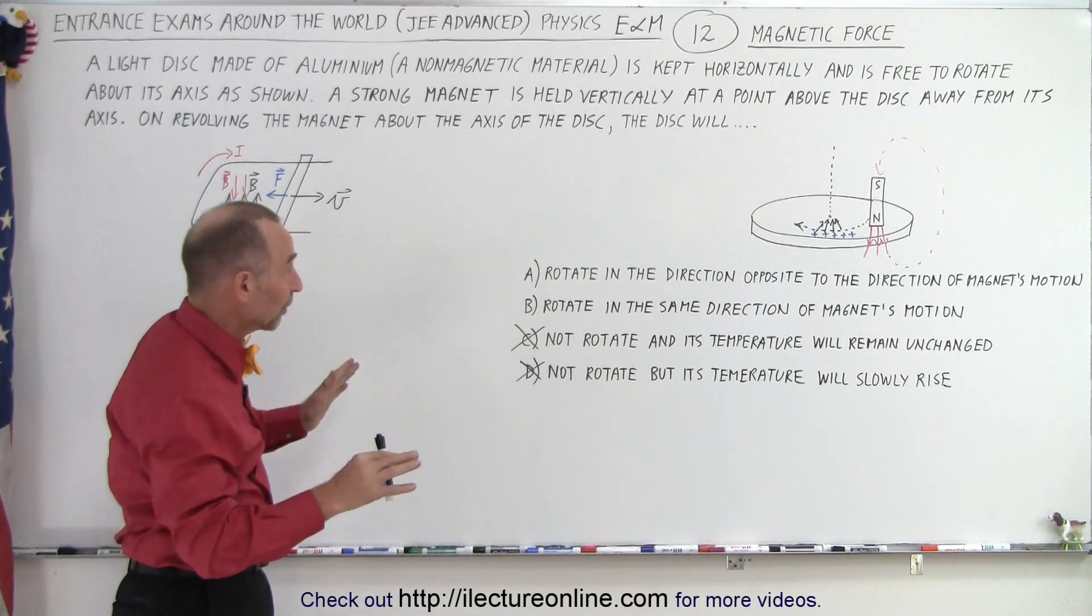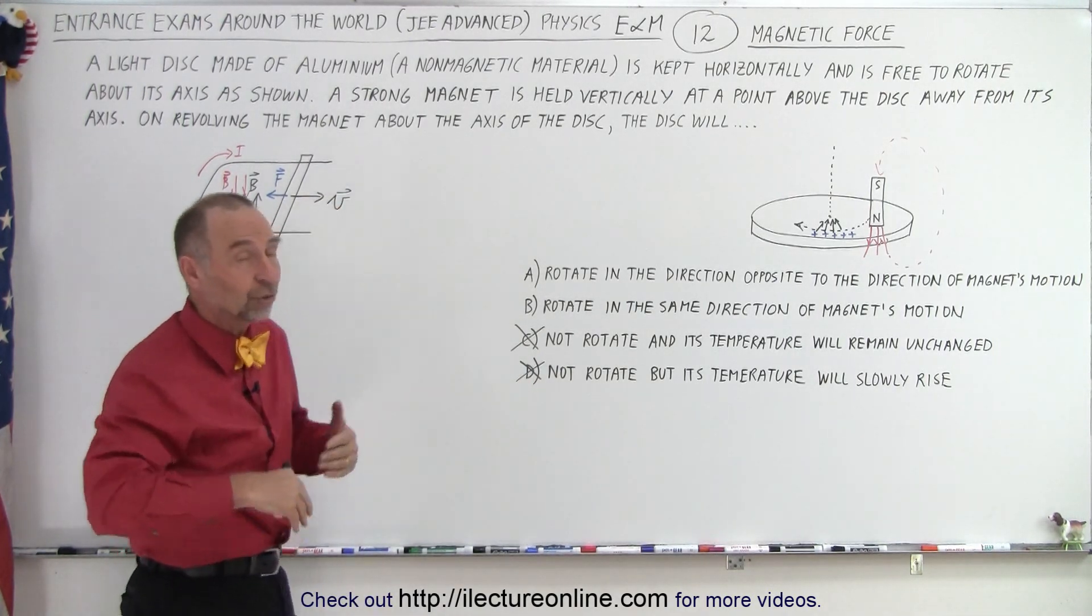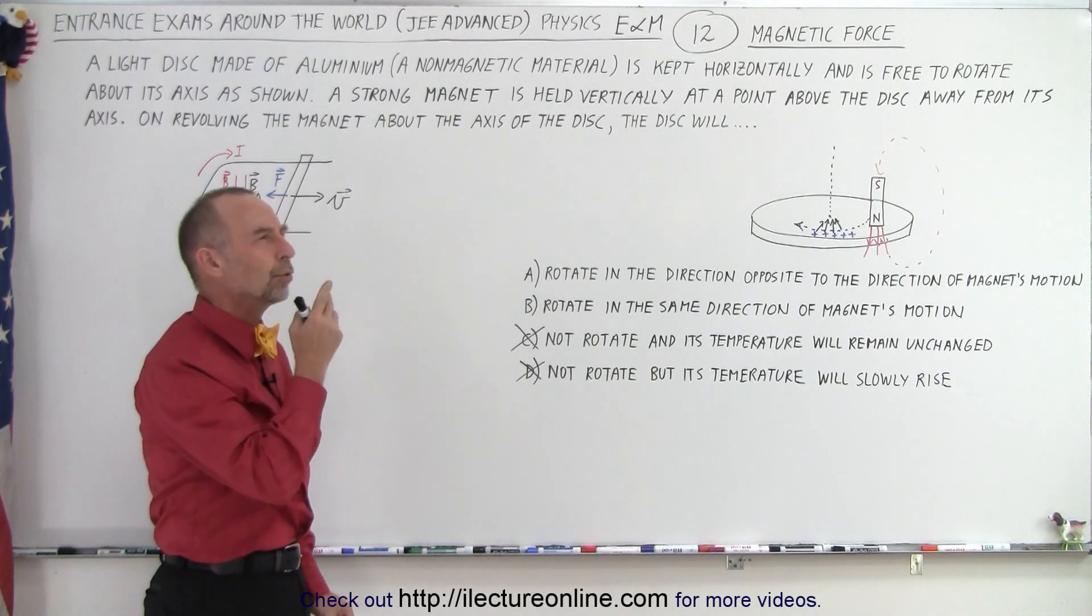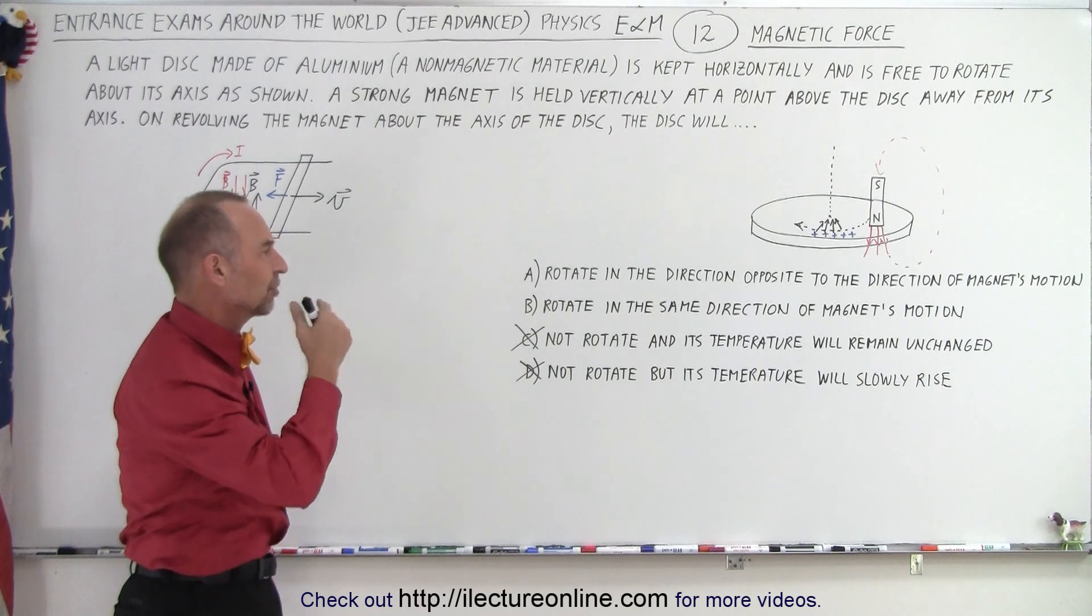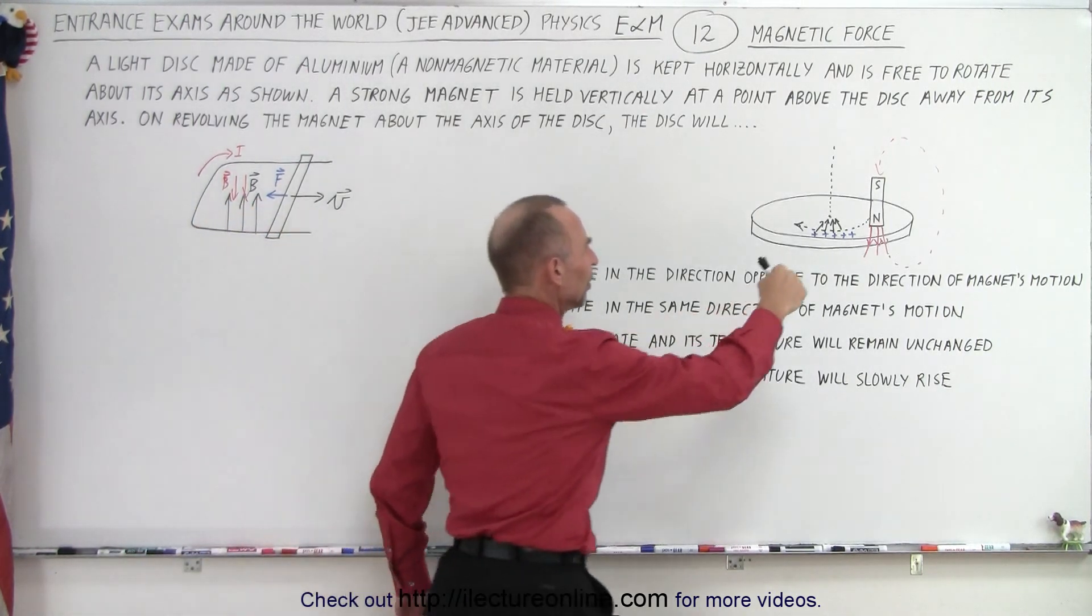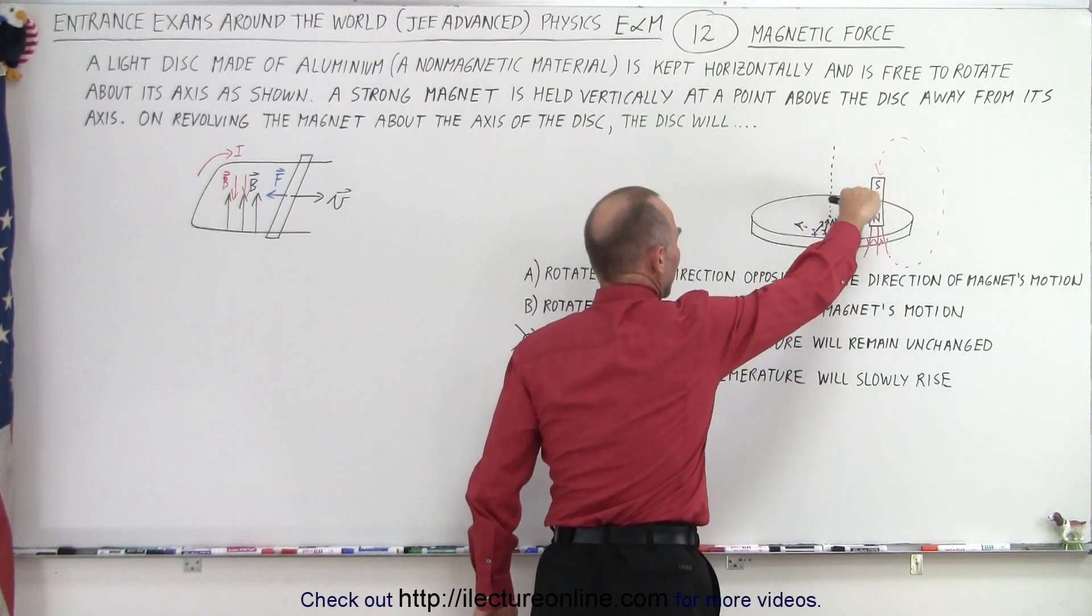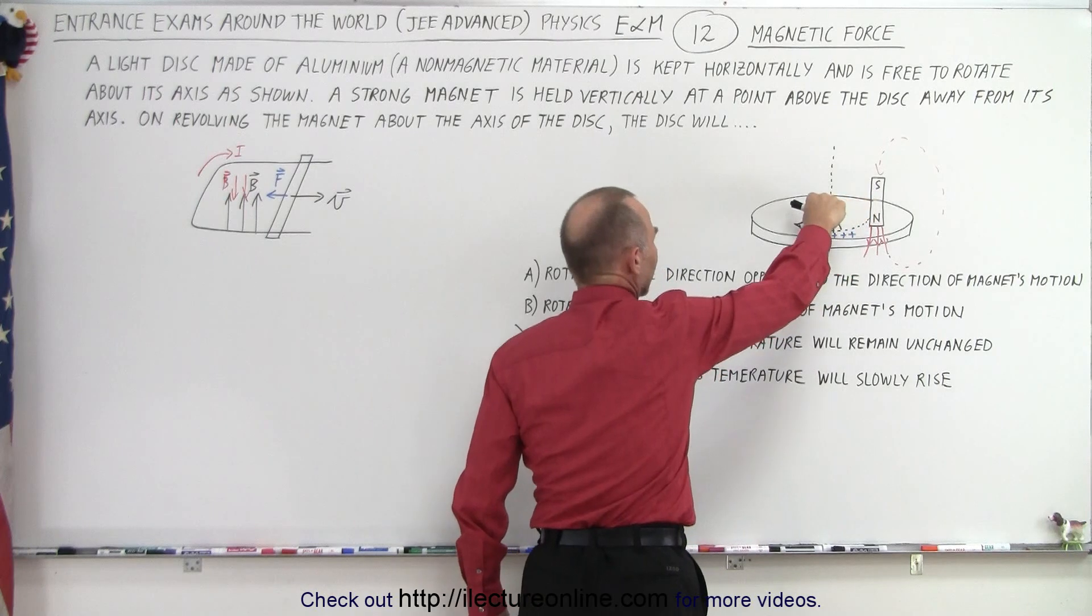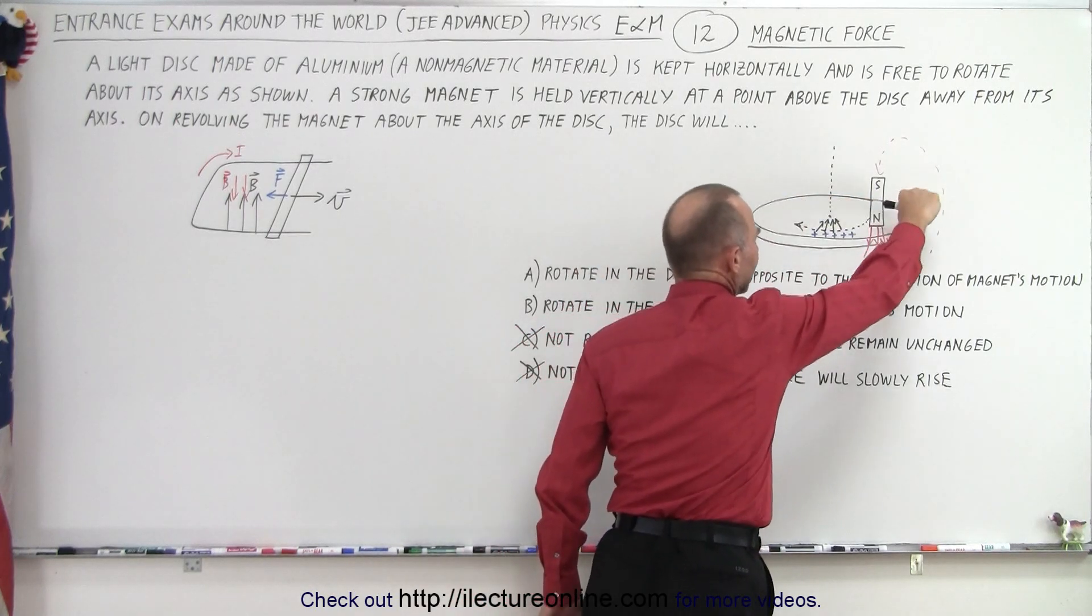So now we're just simply down to the two possible answers A or B. The disk will rotate but will it rotate in the same direction or will it rotate in the opposite direction? So the question is if I push my magnet this way will that cause the disk to rotate in the same direction, or when I push my magnet this way will it cause the disk to rotate in this direction.